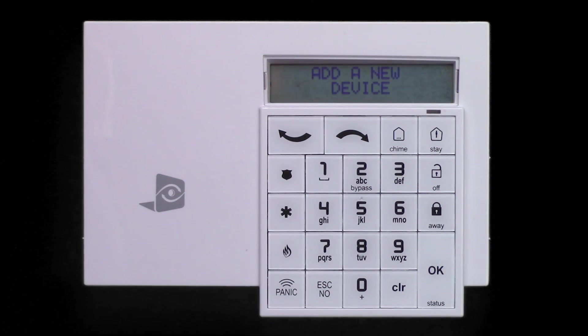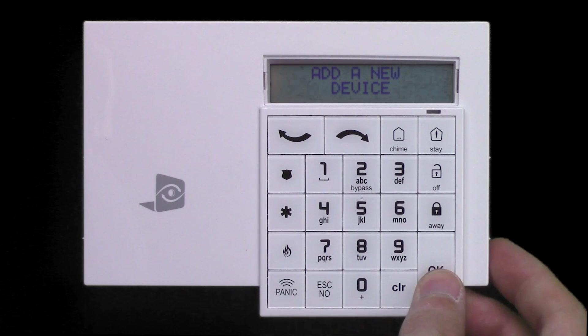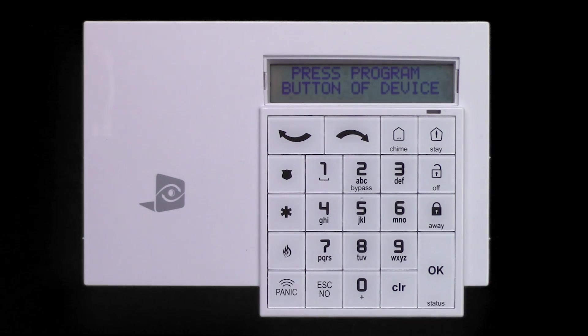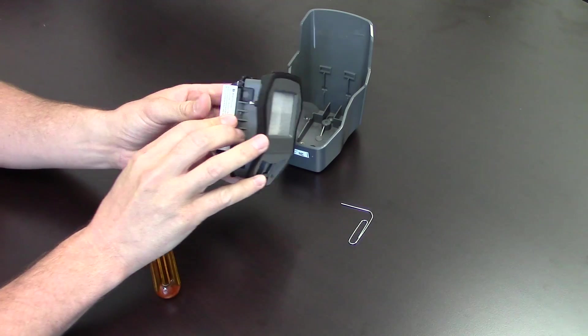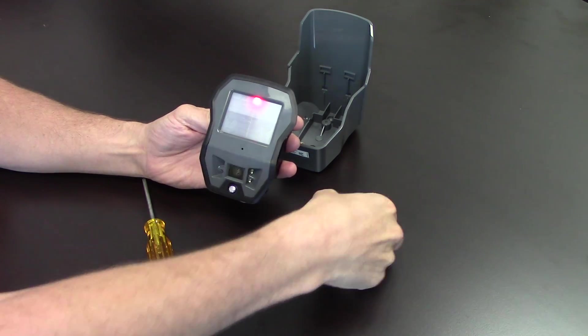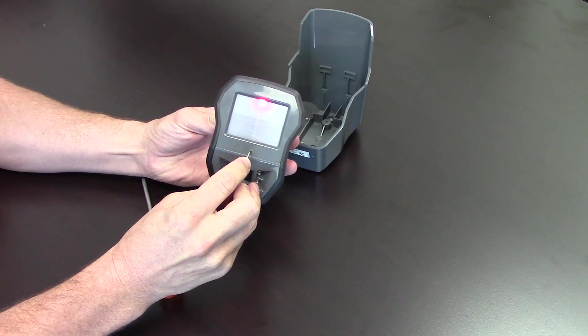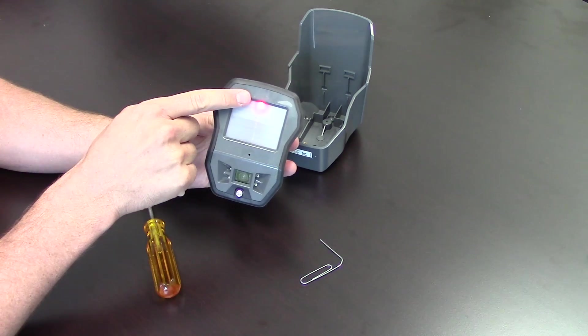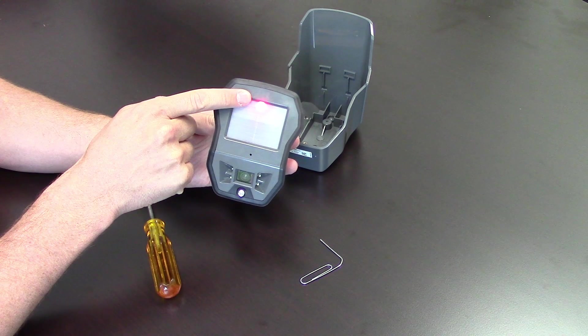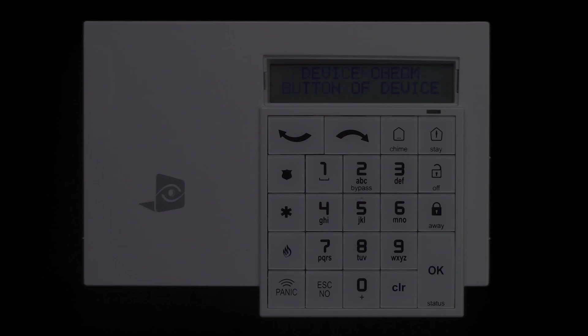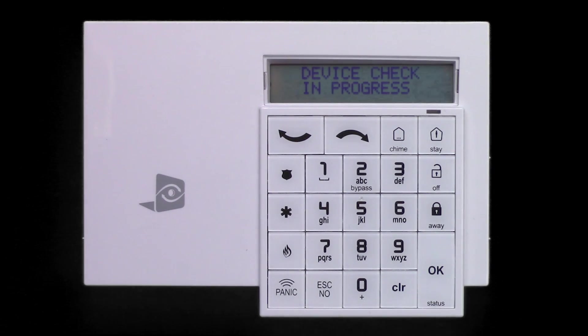Select Devices and select Add a new device. With the display showing Press Program button of Device, use a paperclip to press the programming button on the front of the Motion Viewer. The LED will flash rapidly, then give two slow blinks. The keypad display will show that the device has been recorded.